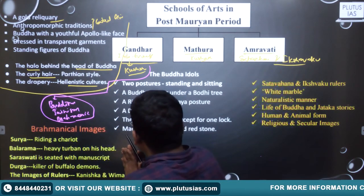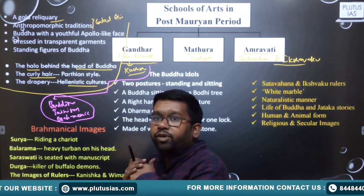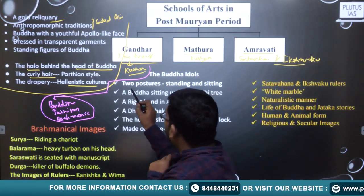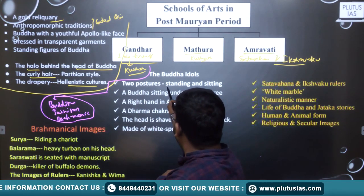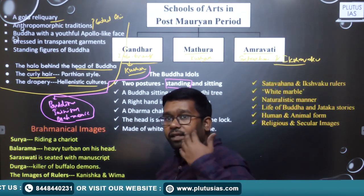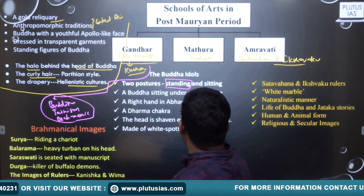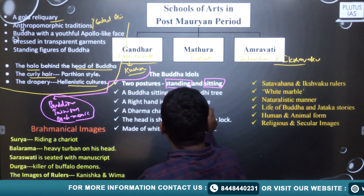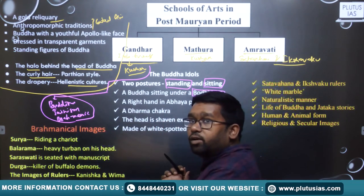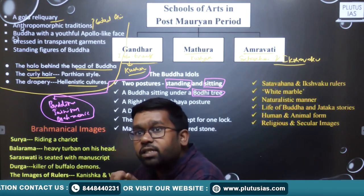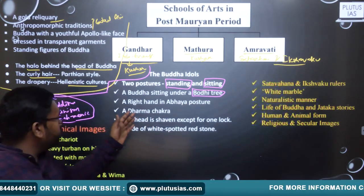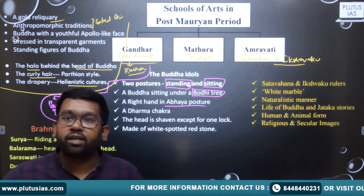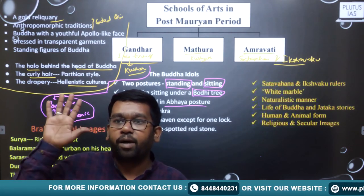If we talk about Buddha first — there are two different postures found in Mathura art: one in the standing position and the other in the sitting position. Buddha sitting under a Bodhi tree is also found. In the right hand, we find the Abhaya mudra — giving blessings — which was not seen in the Gandhara art.